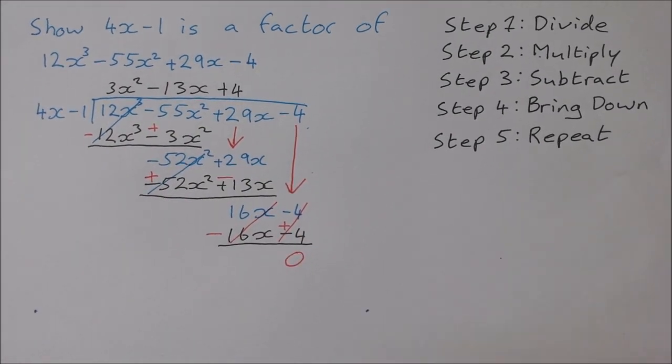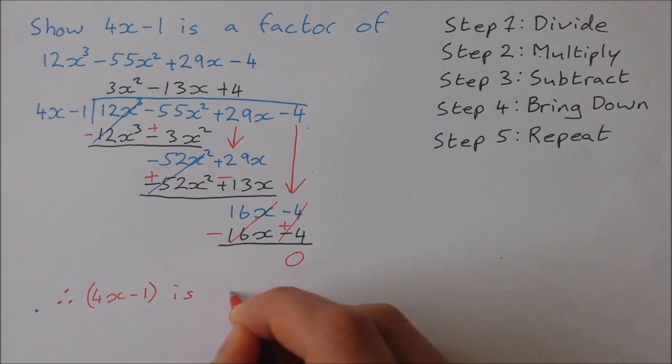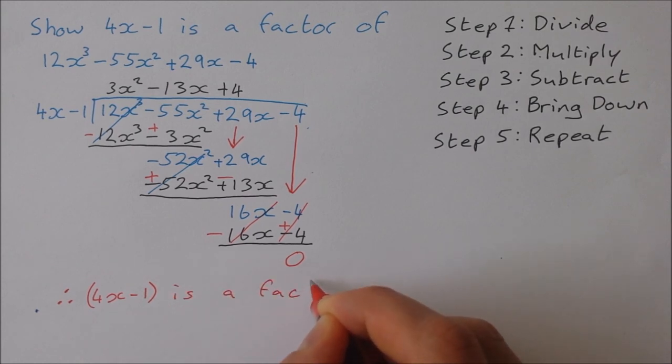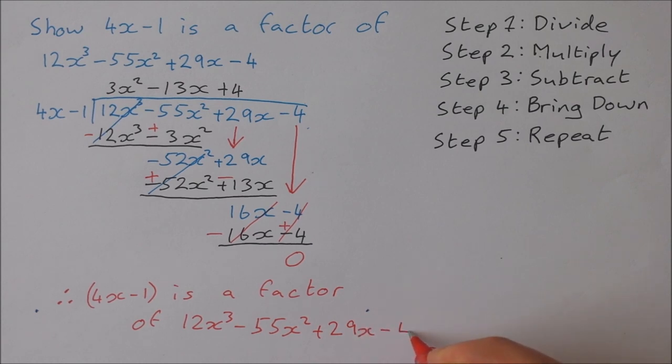So I can finish it off by saying therefore 4x minus 1 is a factor of 12x cubed minus 55x squared plus 29x minus 4.